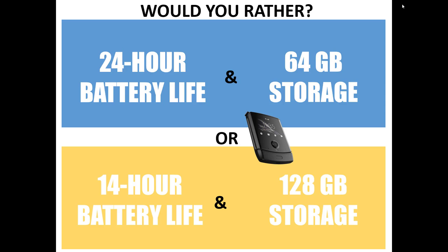Which one would you rather have, assuming all else about the phone is exactly equal? Would you rather have a phone that typically has a 24-hour battery life and 64 gigabytes of onboard storage? Or would you rather have a phone that's exactly the same in every other way, but has a 14-hour battery life and 128 gigabytes of onboard storage?